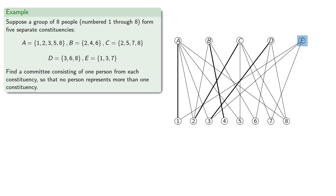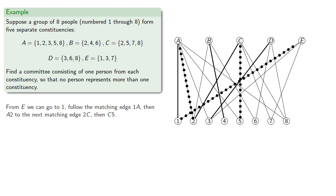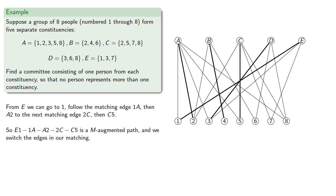From E, we go to the lowest-numbered neighbor, 1, which follows a matching edge, 1A, then to the lowest-numbered neighbor, 2, to the next matching edge, 2C, then from C to the lowest-numbered vertex not included, which is going to be 5. So, E1, 1A, A2, 2C, C5 is a M-augmented path, and we switch the edges in our matching.